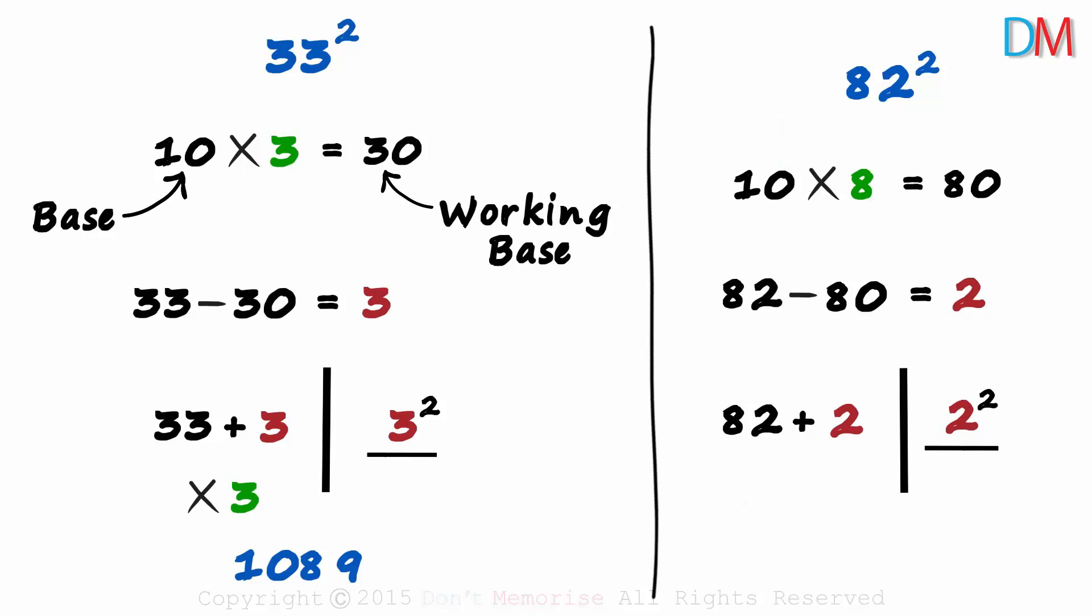To multiply the left hand side with 8. On the left, we will have 84 times 8, that equals 672. And 2 squared is 4. 82 squared is 6724.